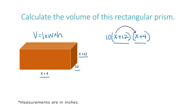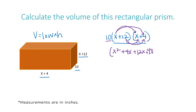So I have x times x, which gives me x squared. Then x times 4 gives me 4x. Then 12 times x — I'm drawing my arrow down below to keep it uncluttered — gives me 12x. And 12 times 4 gives me 48. Now I'm going to remember to bring down the 10 that was on the outside; I chose not to work with it yet, but I want to bring it down.